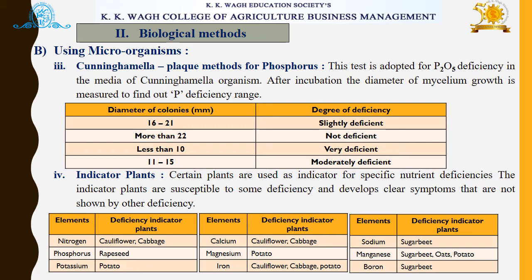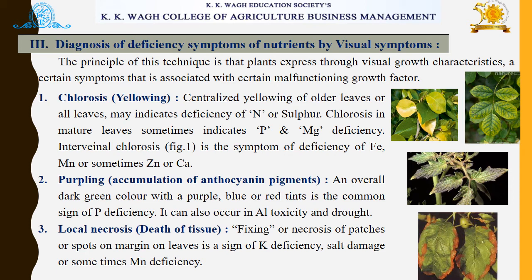Next is indicator plants. Certain plants are used as indicators for specific nutrient deficiencies. Indicator plants are susceptible to some deficiency and develop clear symptoms not shown by other deficiencies. Elements and their deficiency indicator plants are given in three tables. Nitrogen's deficiency indicator plant is cauliflower and cabbage, phosphorus uses red beet, and potassium uses potato, among others.